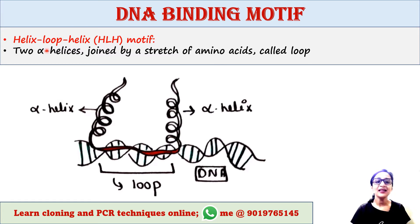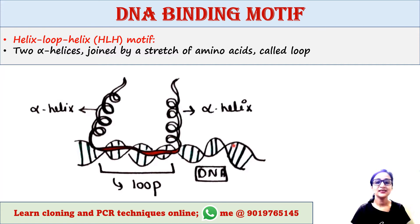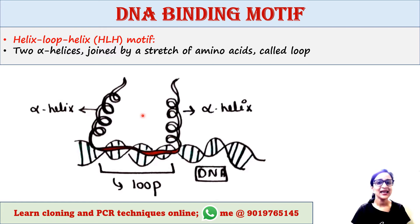Next is the helix-loop-helix or HLH motif. The HLH motif has two alpha helixes, and these two are joined by a stretch of amino acid called a loop. This is also found in different DNA binding proteins. The helix-loop-helix motif is found in the protein, and that protein is binding to the DNA via this motif.